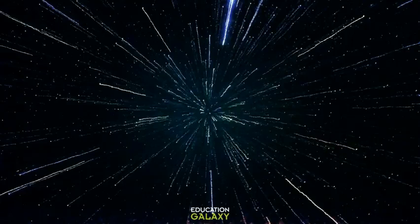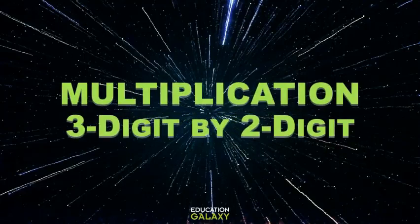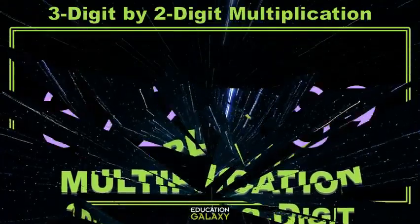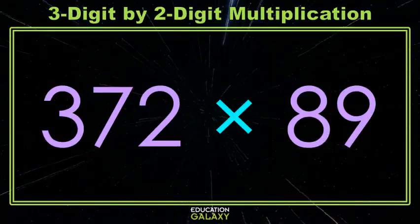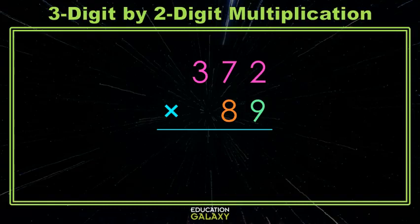Hey everybody, today we're going to practice multiplying three-digit by two-digit numbers. Let's start with an example. This is given horizontally. We like to rewrite that vertically with the place values lined up.